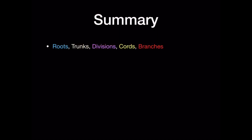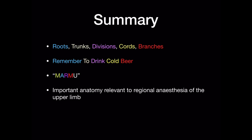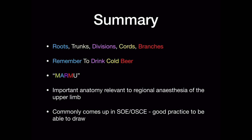To summarise: the brachial plexus can be remembered using 'Remember to Drink Cold Beer' and MARMU. It is an important piece of anatomy that is relevant to regional anaesthesia of the upper limb. It commonly comes up in the OSCE and viva, and it is good practice to be able to draw it.